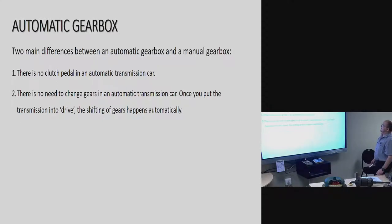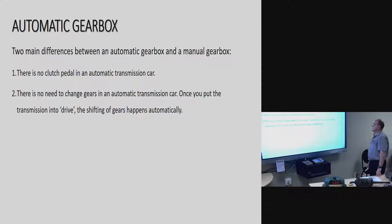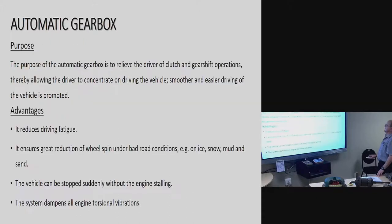Automatic Gearbox. What are the two main differences between an automatic gearbox and a manual gearbox? There is no clutch pedal in automatic transmission, which means you don't need to use the clutch to change gears — it changes gears on its own. There is no need to manually change gears. Once you put the transmission into drive, the shifting of gears happens automatically.